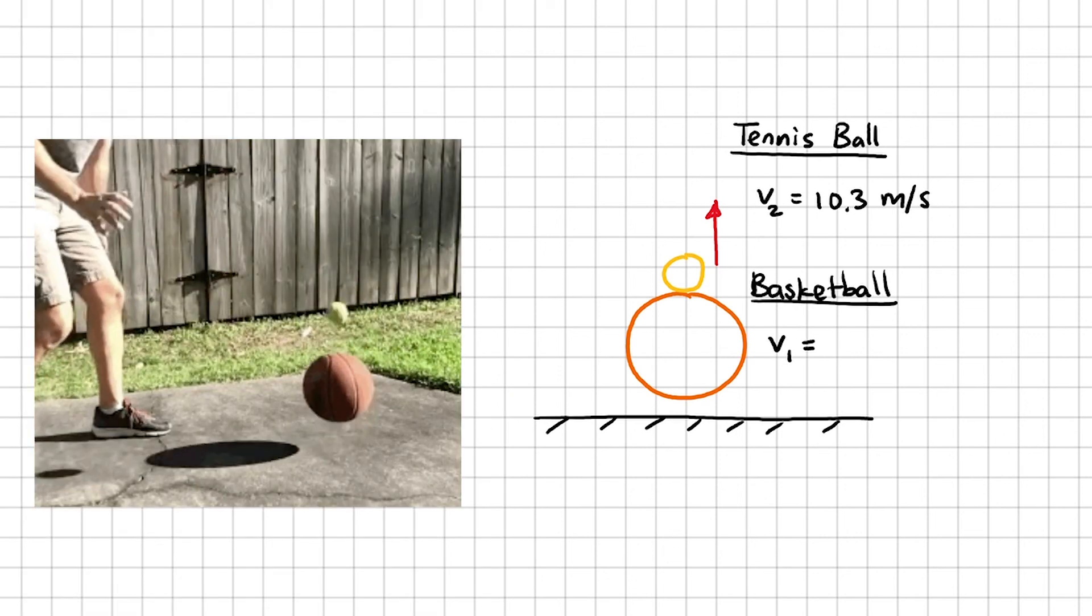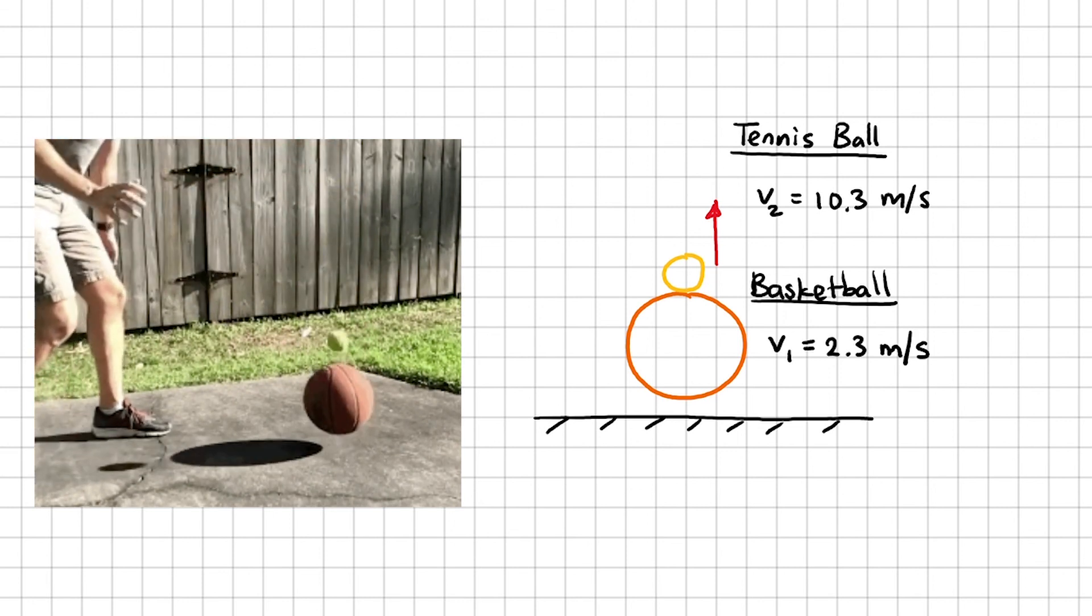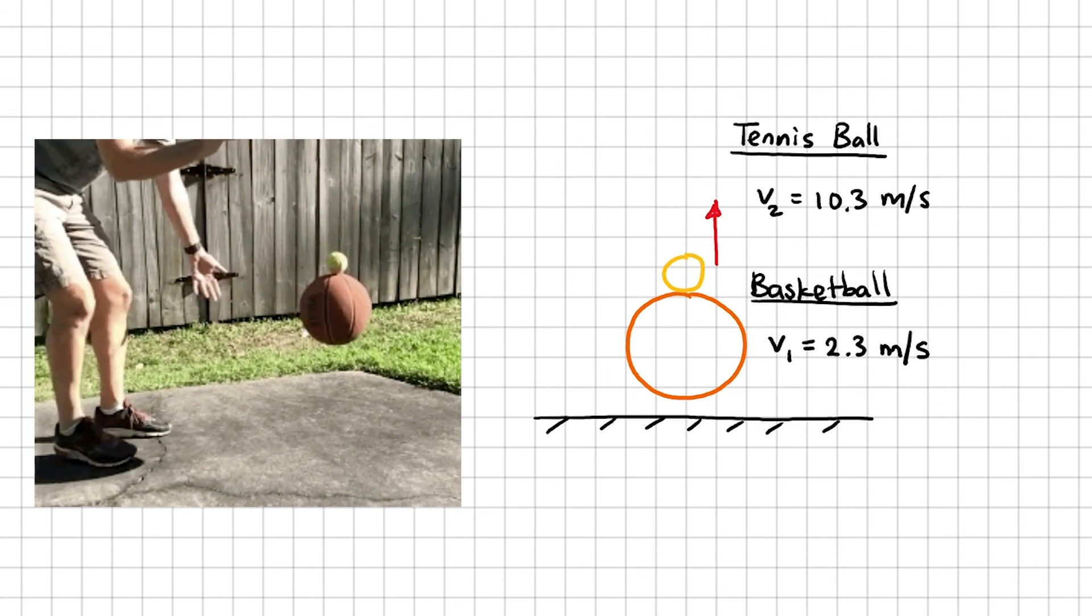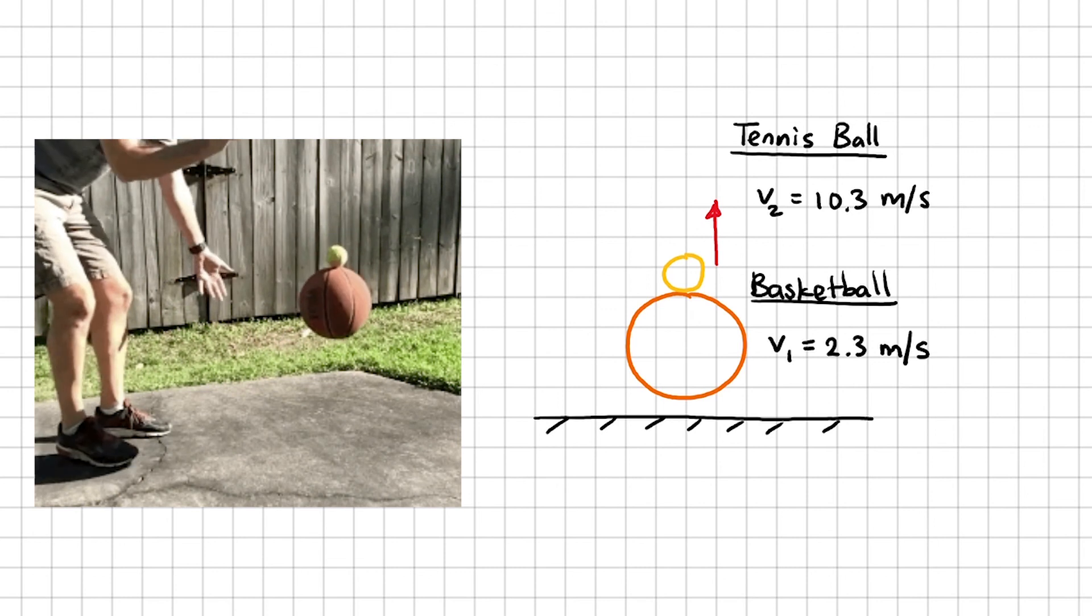So this example here shows us that when a smaller ball is stacked on top of a larger ball and they get dropped together, the smaller ball always travels with a much higher velocity after they collide.